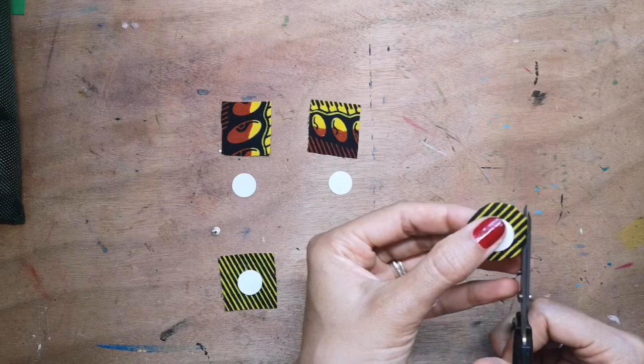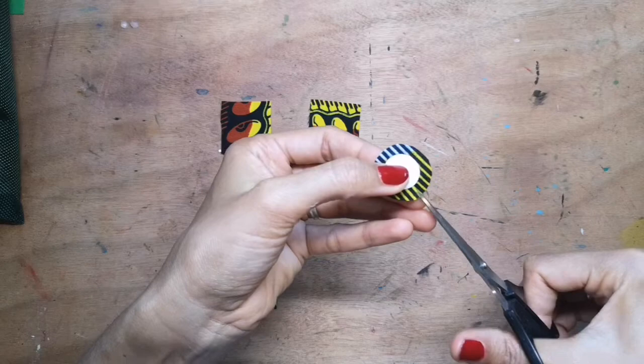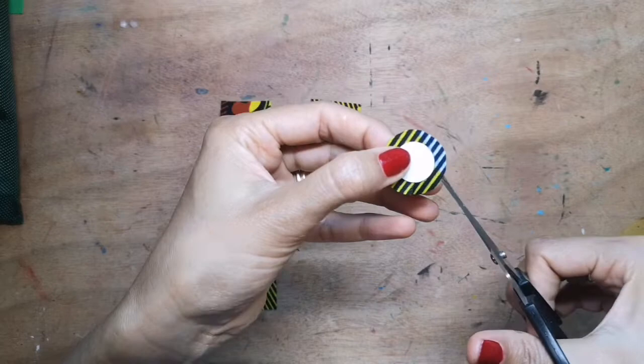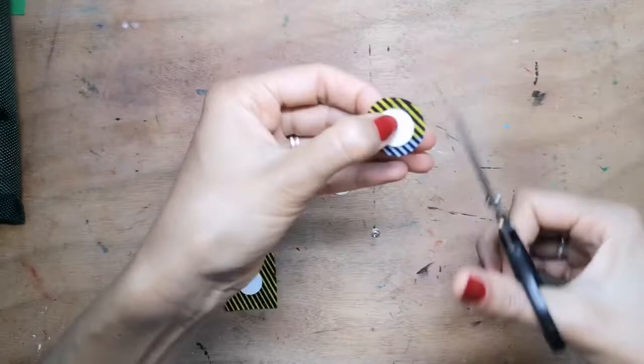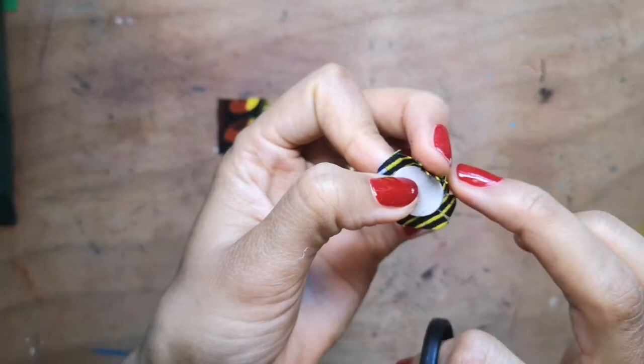Once you're happy with that, the next step is to cut towards the disc all the way around the fabric. Keep going all the way around and do this to both earring backs. If I show you close up you can see I've cut little cuts all the way around.